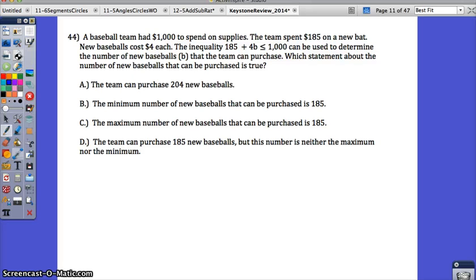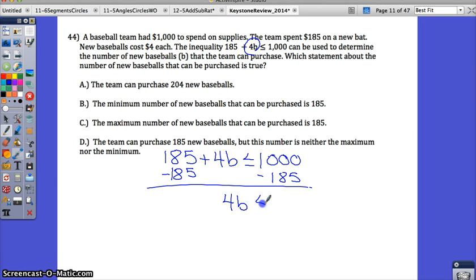So because they gave you the inequality and they're asking you about the number of baseballs but we don't know what it is, the first thing I would do is solve that. And then we'll read our options. So we have 185 plus 4B is less than or equal to 1,000. That makes sense because they only have $1,000 to spend so they can't spend more than that. They can spend all of it but no more. Let's solve this for B. So subtract 185 from both sides and you're left with 4B is less than or equal to 815. Now divide by 4.